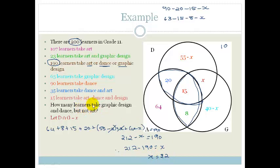So how many learners take graphic design and dance but not art? That would be this bit here. The ones just take graphic design and dance. And that is X which is 22. There you go. So this is how you use Venn diagrams. Grade 11's, go practice. The best way to get really good at this is to practice. And then once you've done that, you can actually go and do the examples at the end of the section. Have a lovely day.